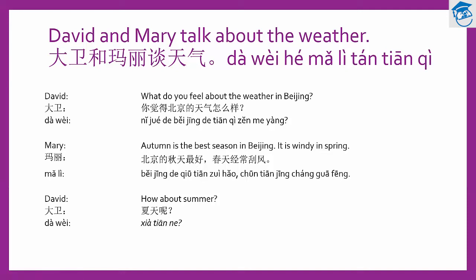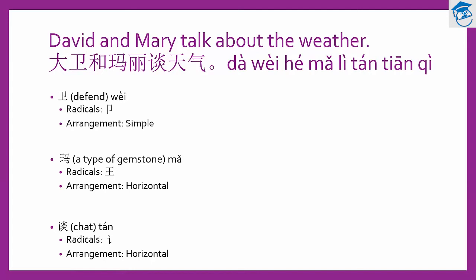Let's pause the conversation for now and continue in the next lesson. Now let's look at the new words. Let's decipher the sentence: David and Mary talk about the weather — 大卫和玛丽谈天气. 大卫 is David. As you have learned, 大 means big, but in the name David, it is just borrowing the sound.